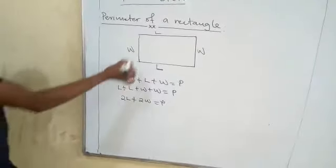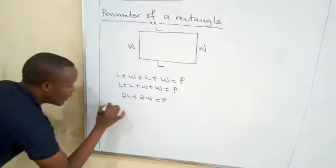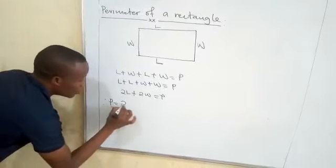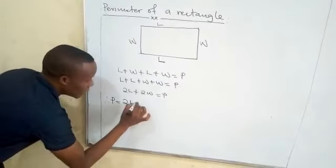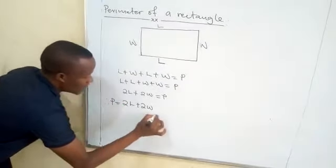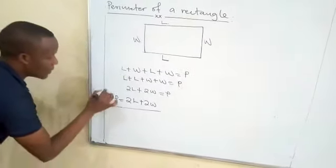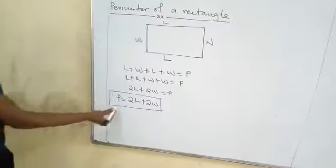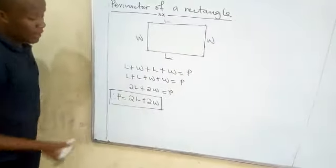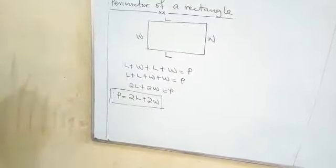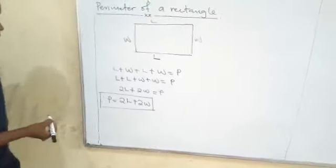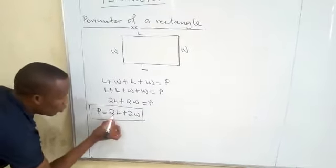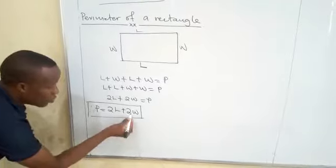Therefore, perimeter of a rectangle is equal to two lengths plus two widths. Perimeter of a rectangle is equal to two lengths plus two widths, because we have two lengths and two widths.